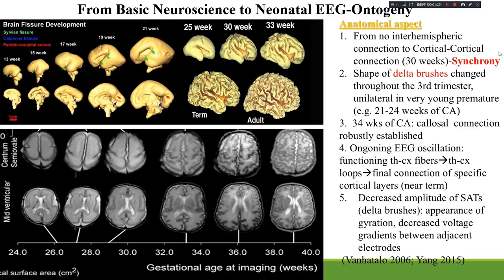At 30 weeks gestational age, synchrony starts to develop. The sylvian fissure is most prominent when the brain begins to develop, followed by the calcarine fissure and parietal occipital sulcus. Around 30 weeks, cortical-cortical connection begins.